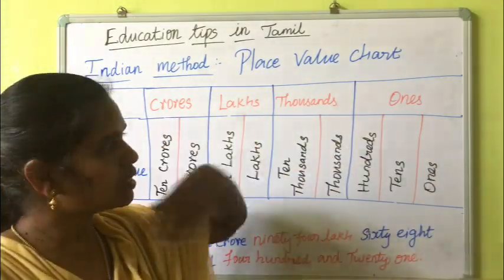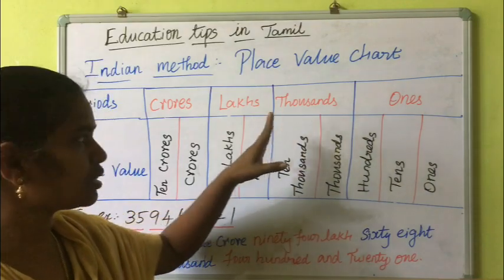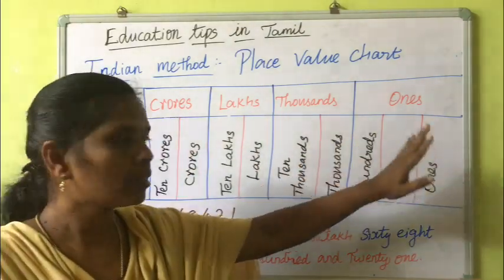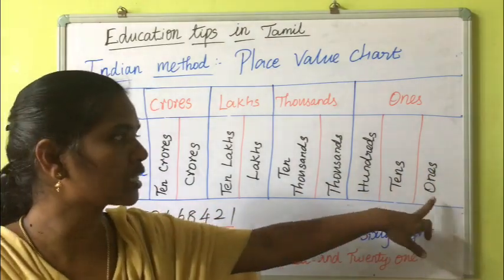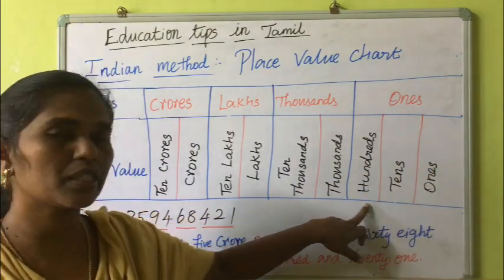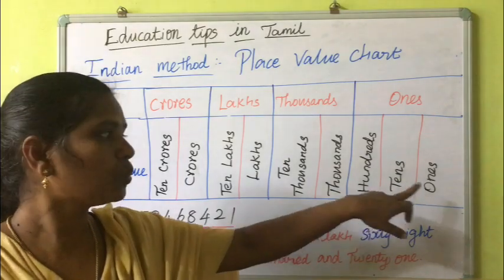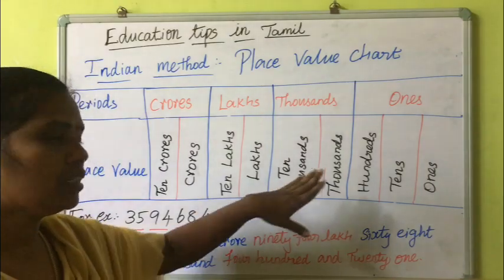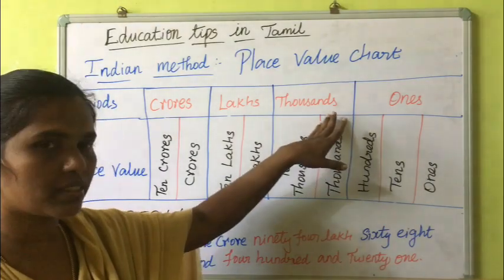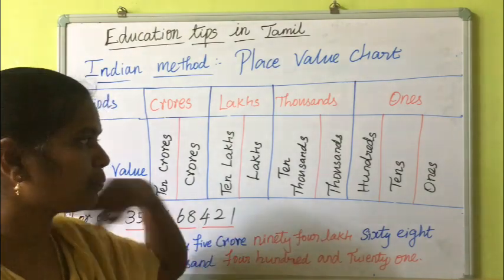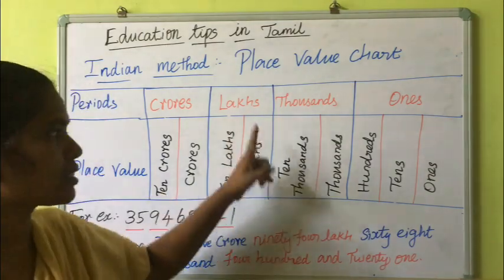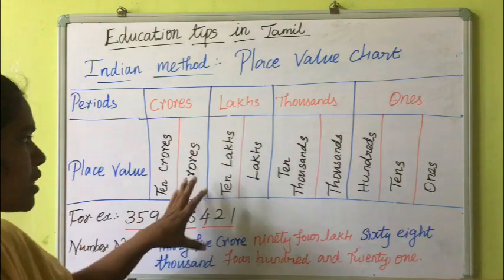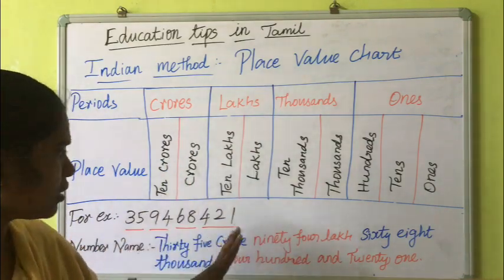Here is the ones term. So under the ones term we have ones, tens, and hundreds. Next is the thousands term, which has thousands and tens of thousands. Next is the lakhs term, with lakhs and ten lakhs. Then the crores term, with crores and ten crores.